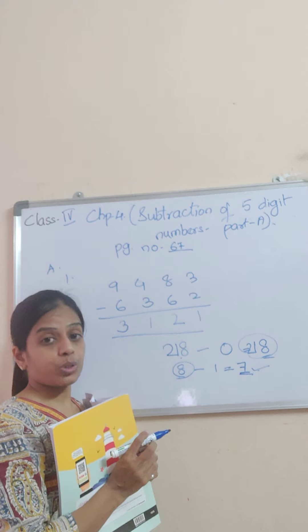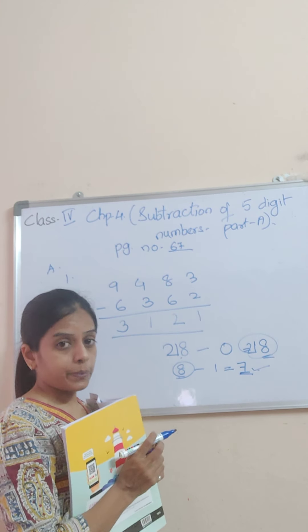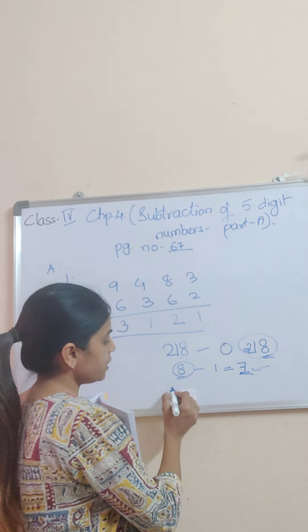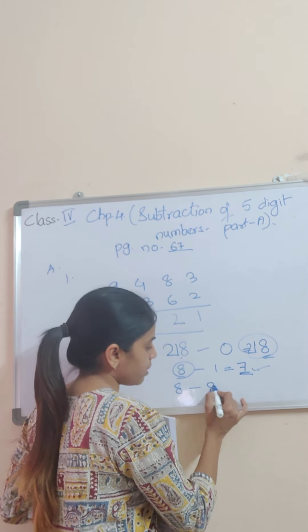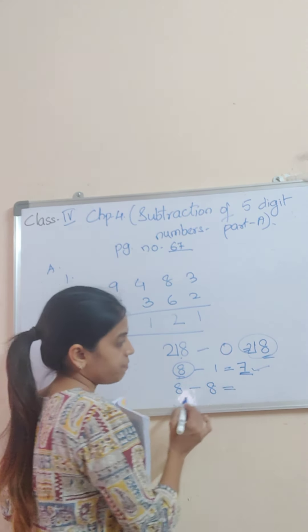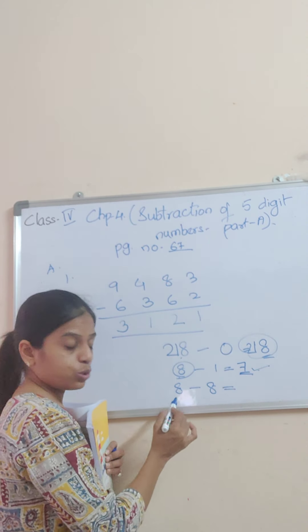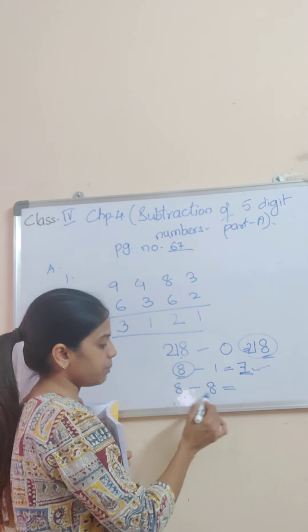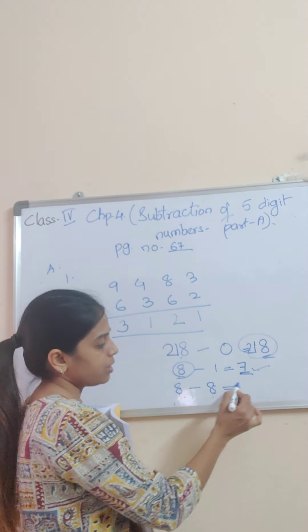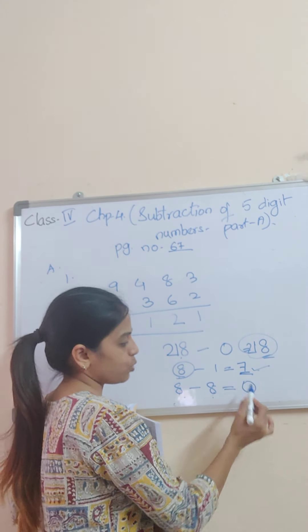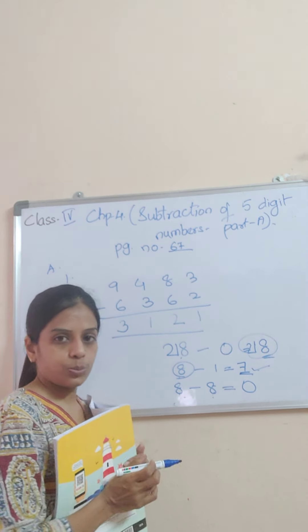Now the most important property: when you subtract 2 same numbers — when both numbers are the same — the answer is always 0.